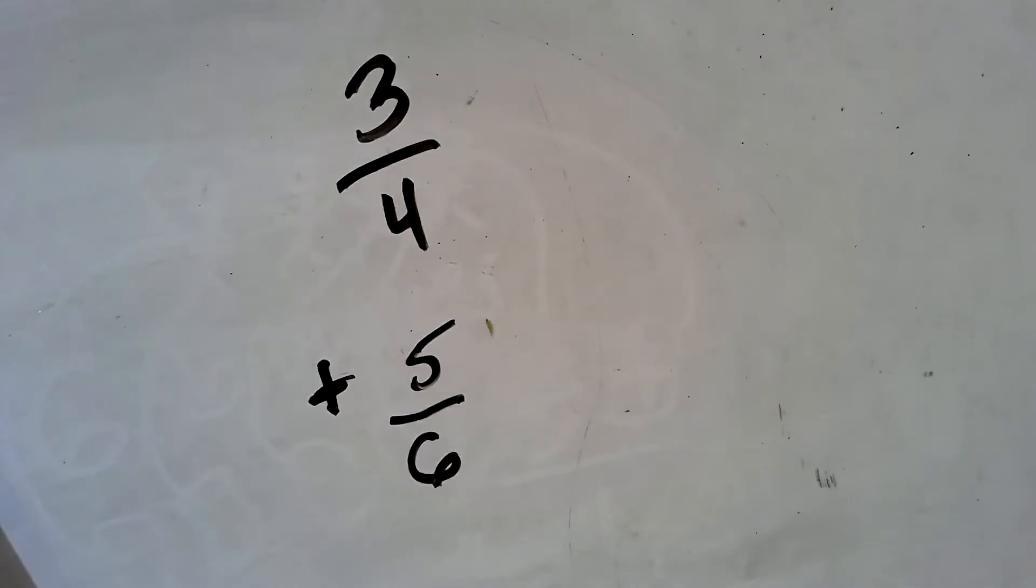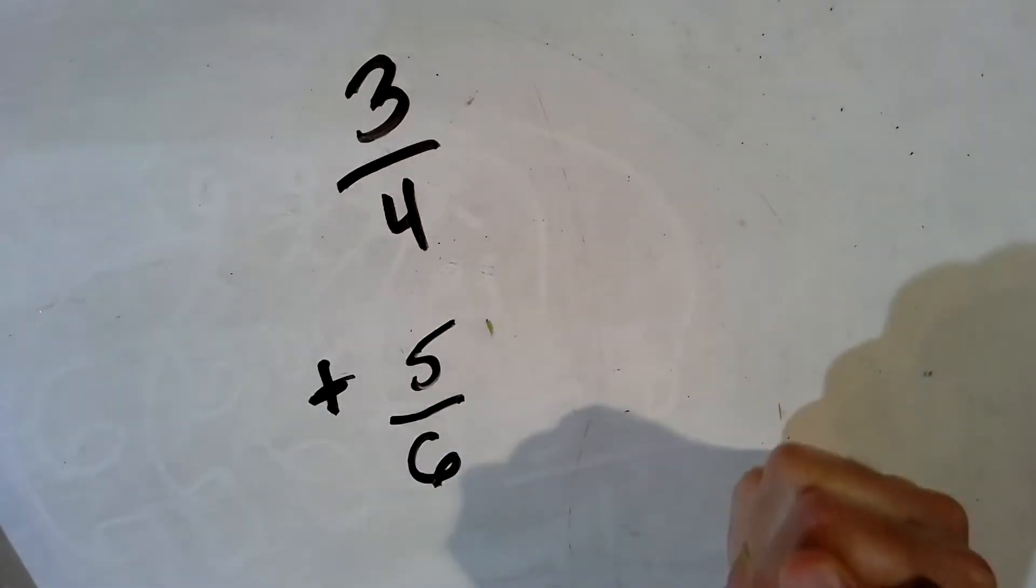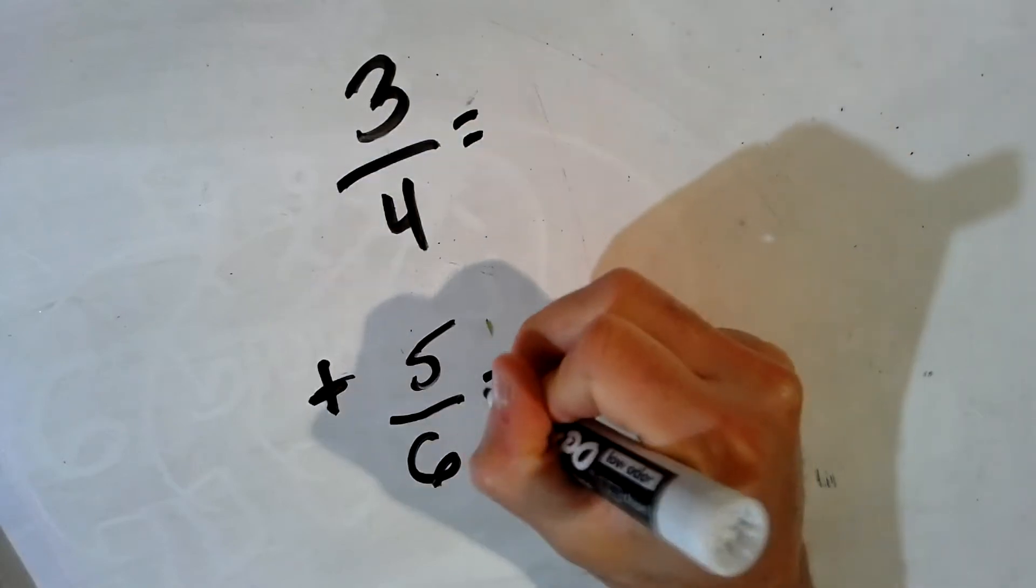Both of those fractions are greater than 1 half, so I know that my sum is going to be more than one whole. But I can't just add until my denominators are the same. I have to find a common denominator of 4 and 6.